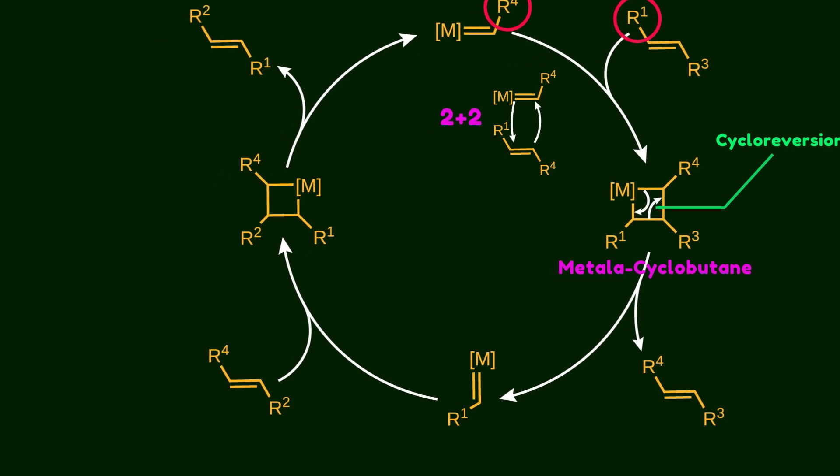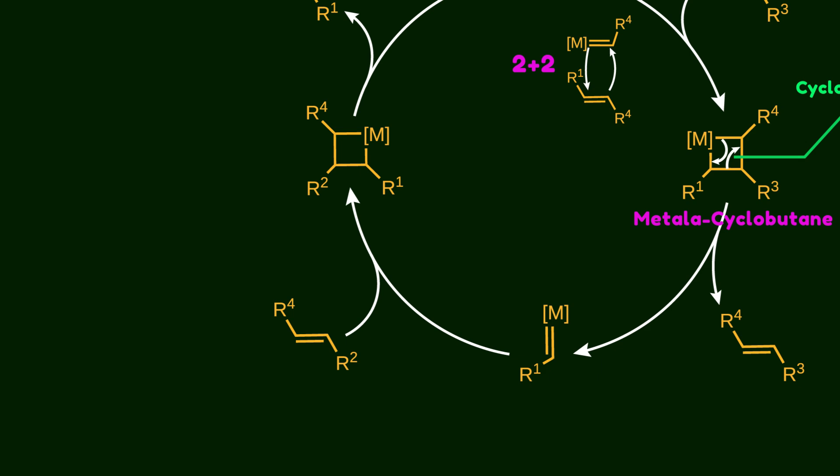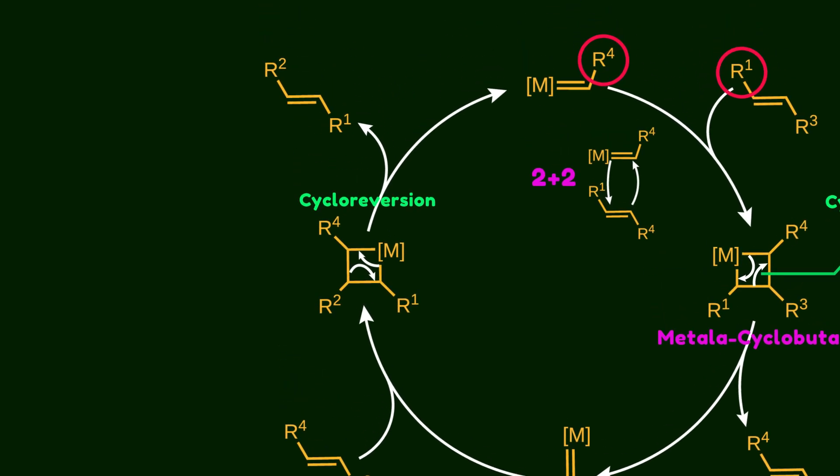Next, another olefin enters the catalytic cycle and reacts with the newly formed metal-alkylidene complex. After another cycloreversion, a neo-alkene leaves the cycle, and the metal-alkylidene is ready to start again.